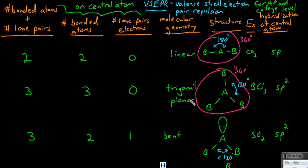This is called a trigonal planar geometry. All three atoms around the central atom are in the same plane — the plane of your screen, or normally the plane of a board or piece of paper. You could fit a piece of paper right over all of these. An example of a trigonal planar geometry is boron trichloride.